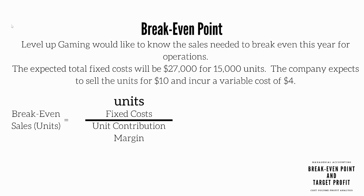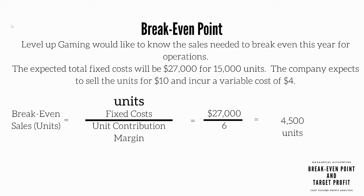Let's start with the break-even point in sales units. We will take fixed costs divided by unit contribution margin. This is $27,000 divided by 6. We get the 6 by taking the $10 sales price minus $4 in variable costs. So $27,000 divided by 6 comes out to 4,500 units to break even.